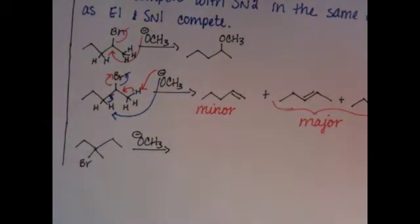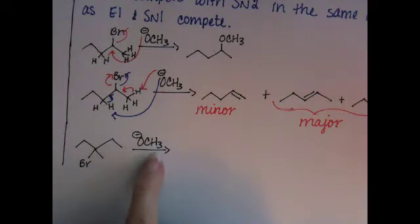So here's the deal. We've got a strong nucleophile, which is going to tell us that we're doing a second-order reaction, like SN2, but we have a tertiary alkyl halide, which can't do SN2 ever because there's too much steric hindrance.